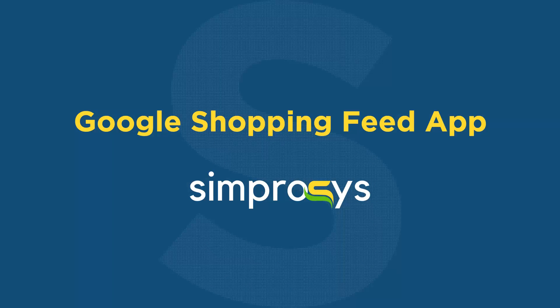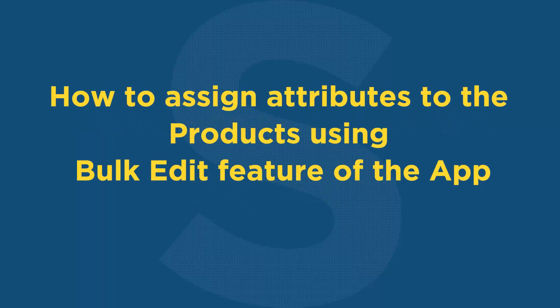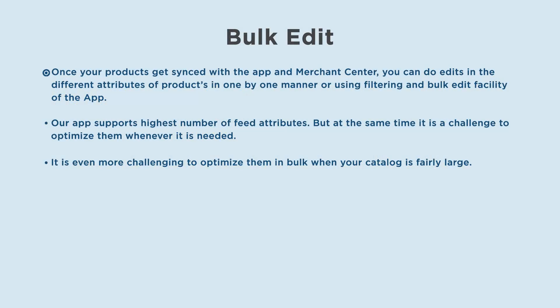Hello friends, welcome to the help videos of Google Shopping Feed app by Symprosis. In this video we are going to see how to assign attributes to products using the bulk edit feature of the app. Once your products get synced with the app and Merchant Center, you can do edits on different attributes of products one by one, or using the filtering and bulk edit facility of the app.